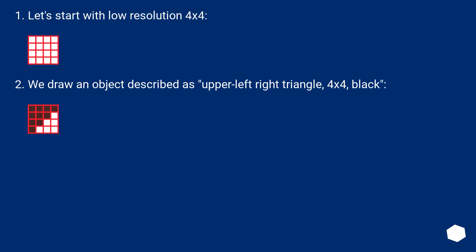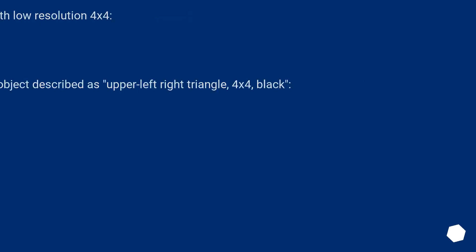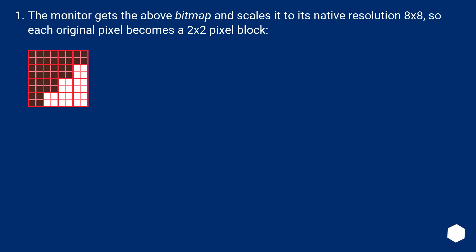For bitmaps it may not make a difference, but for TrueType fonts it does. Let's start with a low resolution 4×4 example. We draw an object described as an upper-left right triangle on a 4×4 plaque. The monitor then gets that bitmap and scales it to its native resolution 8×8, so each original pixel becomes a 2×2 pixel block.